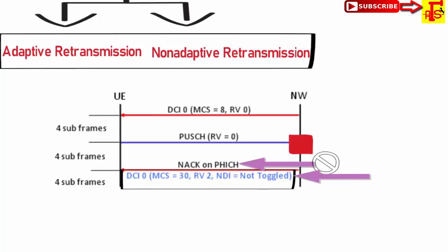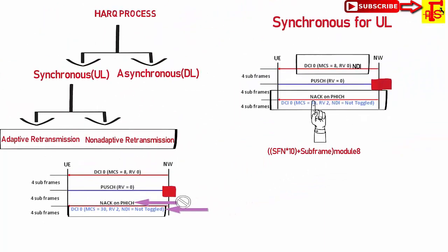The UE receives DCI-0 and HARQ feedback, but DCI-0 decides whether it is new data or a retransmission. The NDI value in DCI-0 determines this: for first transmission NDI is 0, for the second transmission NDI is also 0, which indicates the same data retransmission.